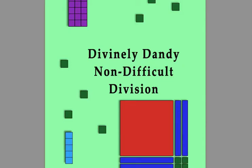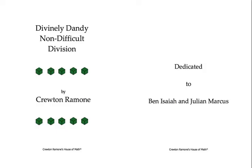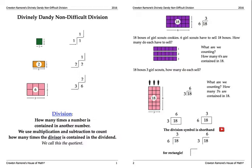Divinely Dandy Non-Difficult Division is done, there it is. All right, so what do you get when you pay for this book? Well, first off, it's printable. Unlike the Supremely Simple Subtraction that you got for free, you can't print it. But since you're buying this one, you can print this thing out and go to town with your children.